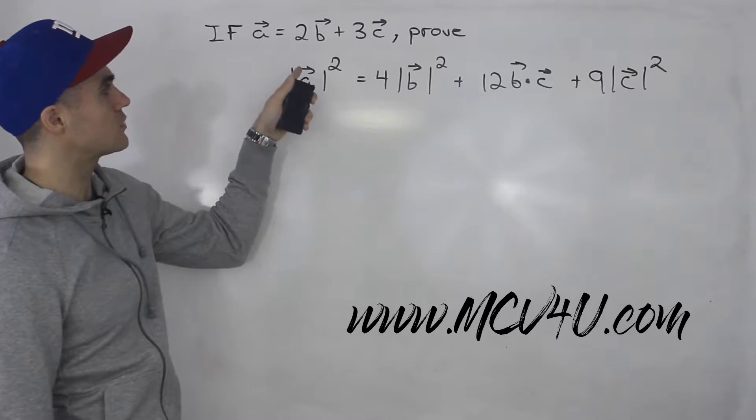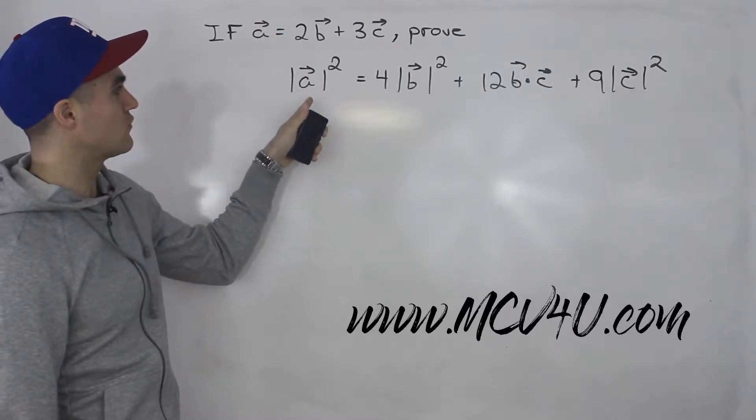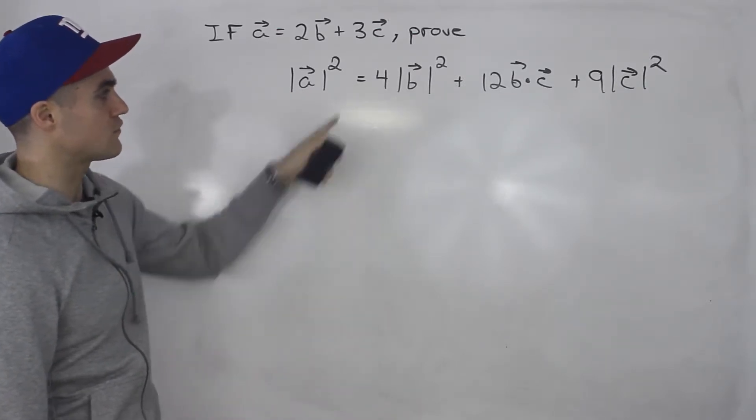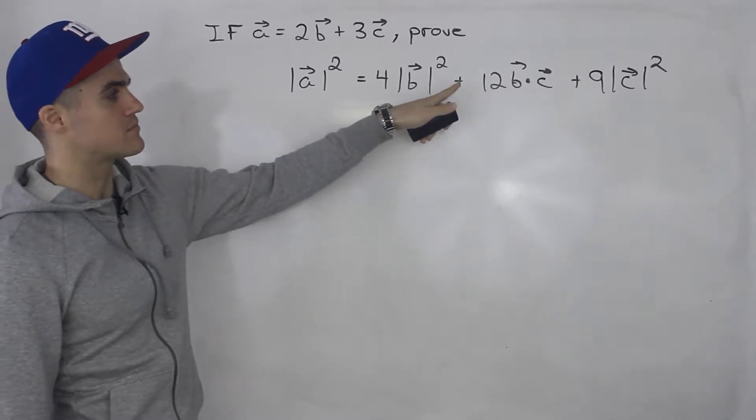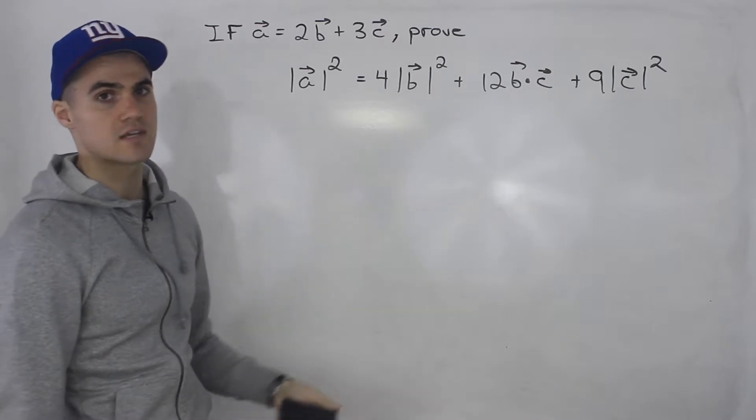If vector a is equal to 2 times vector b plus 3 times vector c, we have to prove that the magnitude of vector a squared is equal to 4 times the magnitude of b squared plus 12 times b dot c plus 9 times the magnitude of c squared.